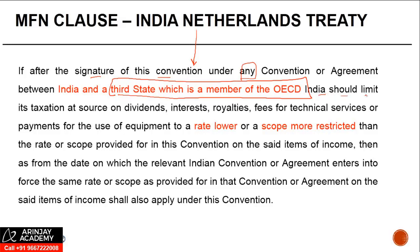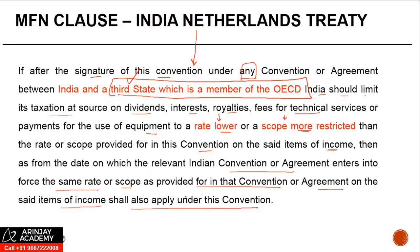Should India limit its taxation at source on dividend, interest, royalty, FTS, or payment for the use of equipment, to a rate lower or a scope more restricted — so in respect of any of these payments, if India enters into a treaty with a third state which is a member of OECD where the rate of tax is lower or the scope of taxation is limited in India's favor, then the rate or scope provided for in this convention on the said item of income — then as from the date on which the relevant Indian convention or agreement enters into force with the third state, the same rate or scope as provided for in that convention or agreement on the said item of income shall also apply under this convention.